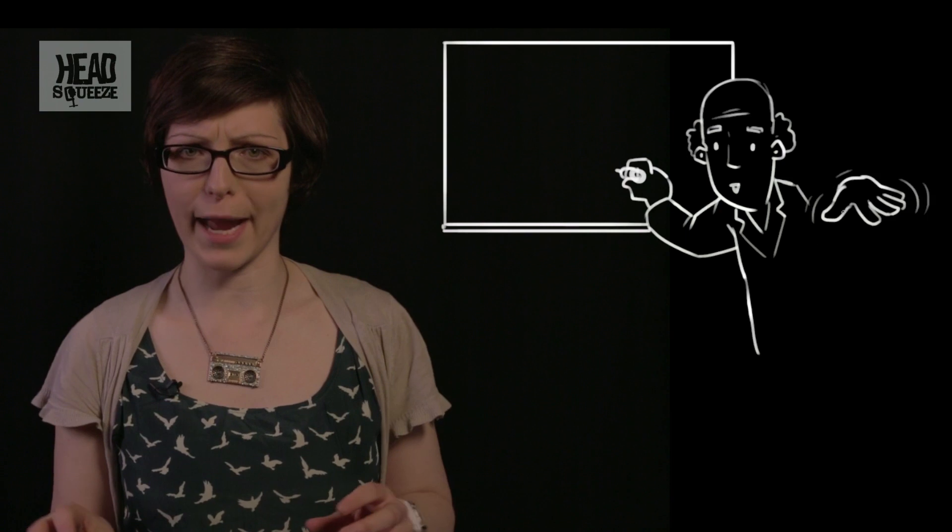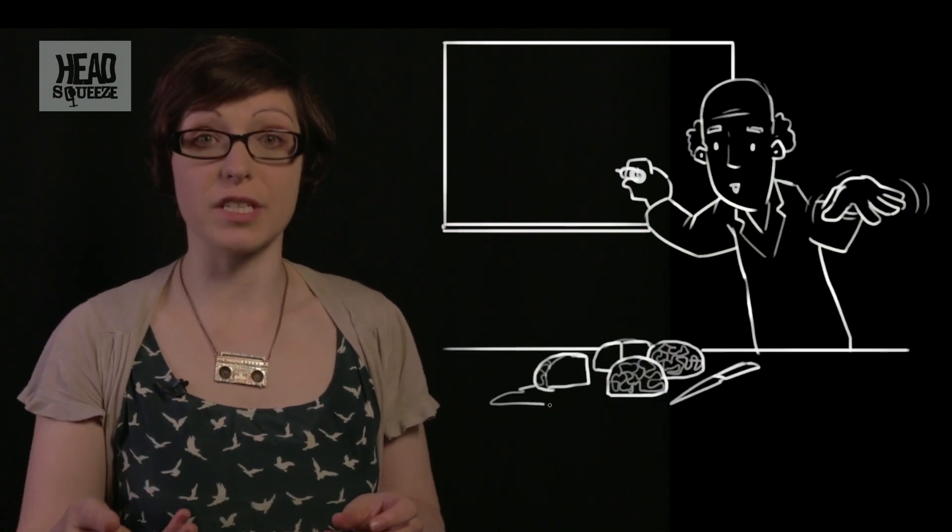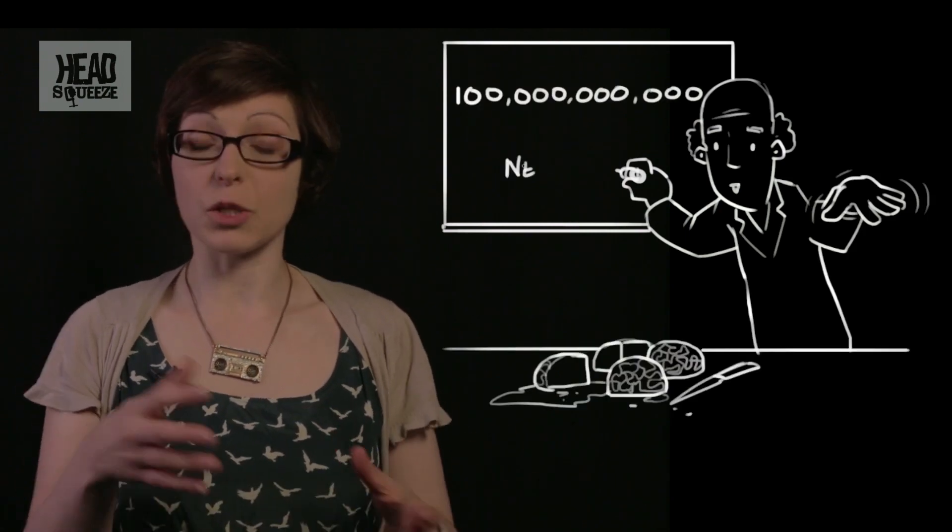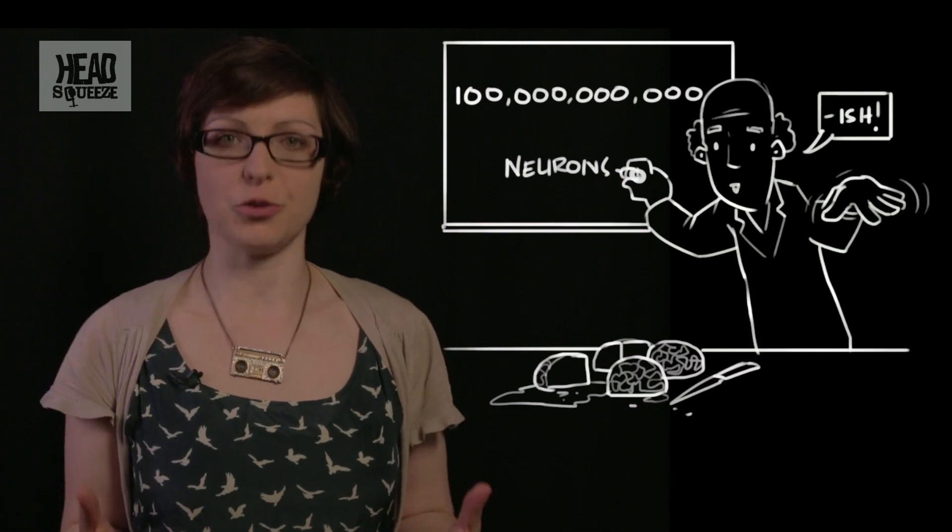So how do we know there are 86 billion neurons inside? Well, to be honest, if you're a bit squeamish, I would look away now. Well previously scientists have just looked at different parts of the brain, worked out how many neurons there are in each section and added it all up. They came to about 100 billion back then.